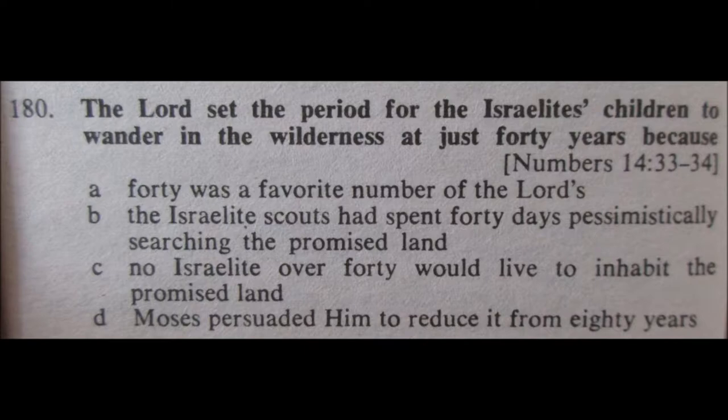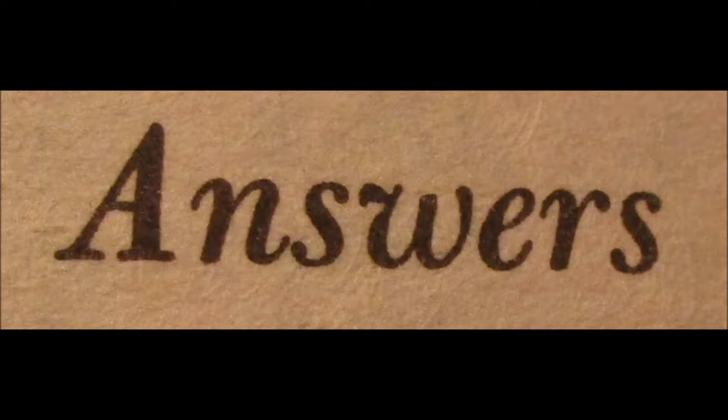Now it's off to the back of the book where the answers are waiting for me. For the first one, the correct answer is D, and I answered A — not off to a great start. For 171, that was the order of those punishments: three was terror and consumption, then four, wild beasts, then one, pestilence in their cities, then two, causing them to eat the flesh of their sons and daughters. So the correct answer was D for 171, and I marked A.